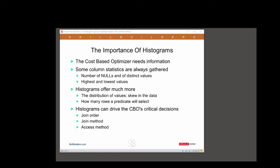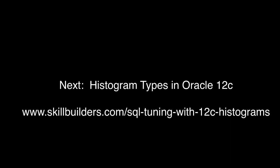Histograms tell the optimizer how many rows will actually be selected by a particular predicate. This information drives the optimizer's critical decisions: your table join order, your table join method, and the access methods used to get to the data.